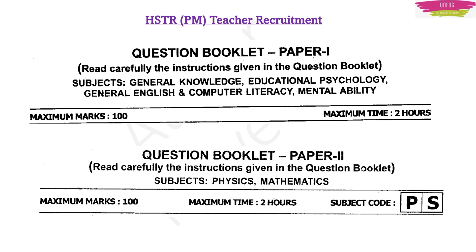The second paper is Paper two. For PM method aspirants, Paper two will cover physics and mathematics. For CB method aspirants, Paper two will cover chemistry and biology. Paper two also has 100 questions: 40 questions for physics, 40 questions for mathematics, and 20 questions for methodology.